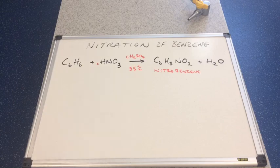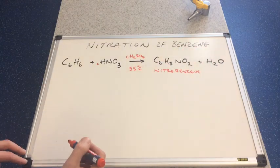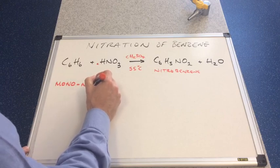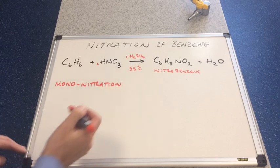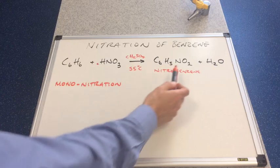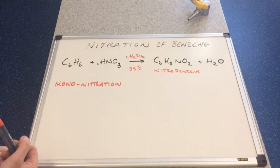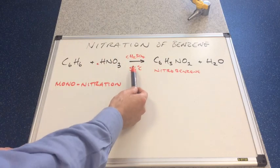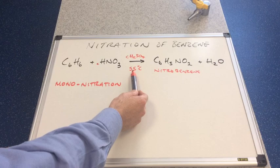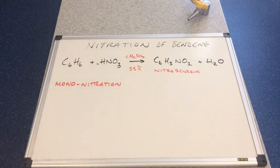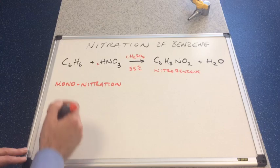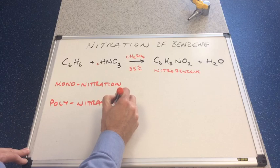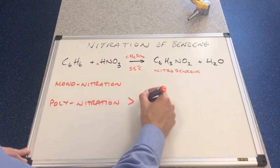Another key word that we need to use, this type of nitration is called mononitration. That's basically because one nitro group has substituted with the benzene ring and this ties in nicely with the temperature. If the temperature was higher than 55 degrees C, you run the risk of getting what's called polynitration.